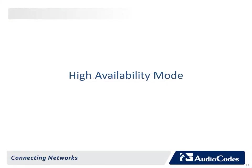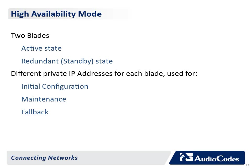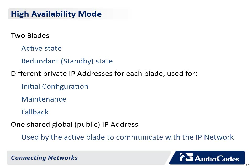High availability mode. This section describes how to assign IP addresses to the Mediant 3000 High Availability (HA) device. The Mediant 3000 HA houses two TP6310 blades or two TP8410 blades, where one is active while the other is redundant or in standby. Each blade has a different private IP address used for initial configuration, maintenance, or fallback. In addition, the device has a global or public IP address used by the active blade for communicating with the IP network. From the network's perspective, the two blades share the same global IP address, and the redundant blade is a transparent entity.